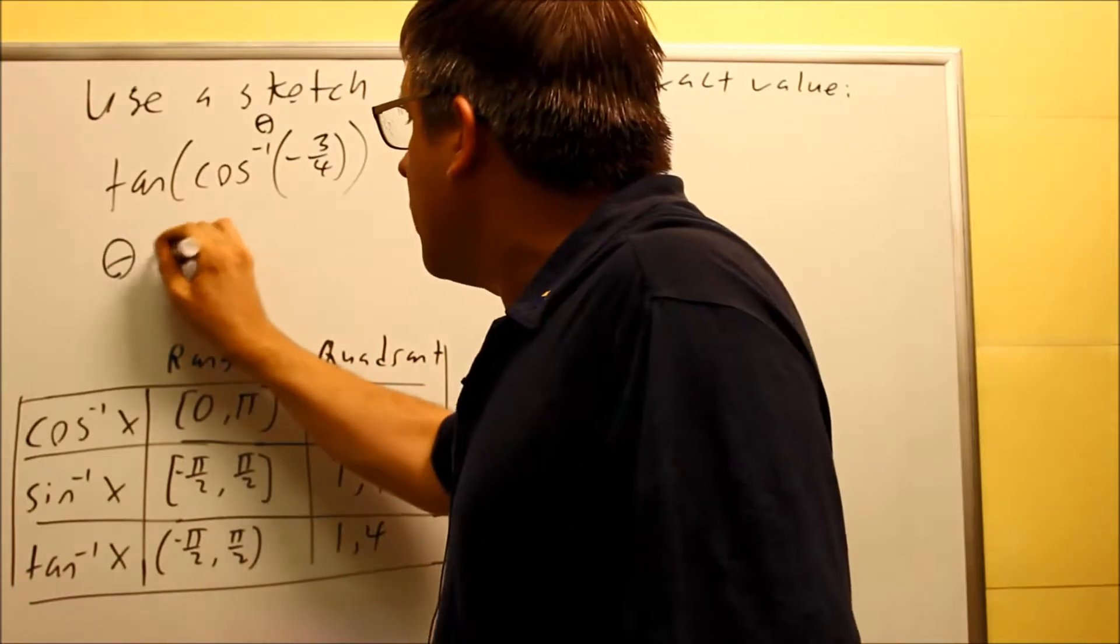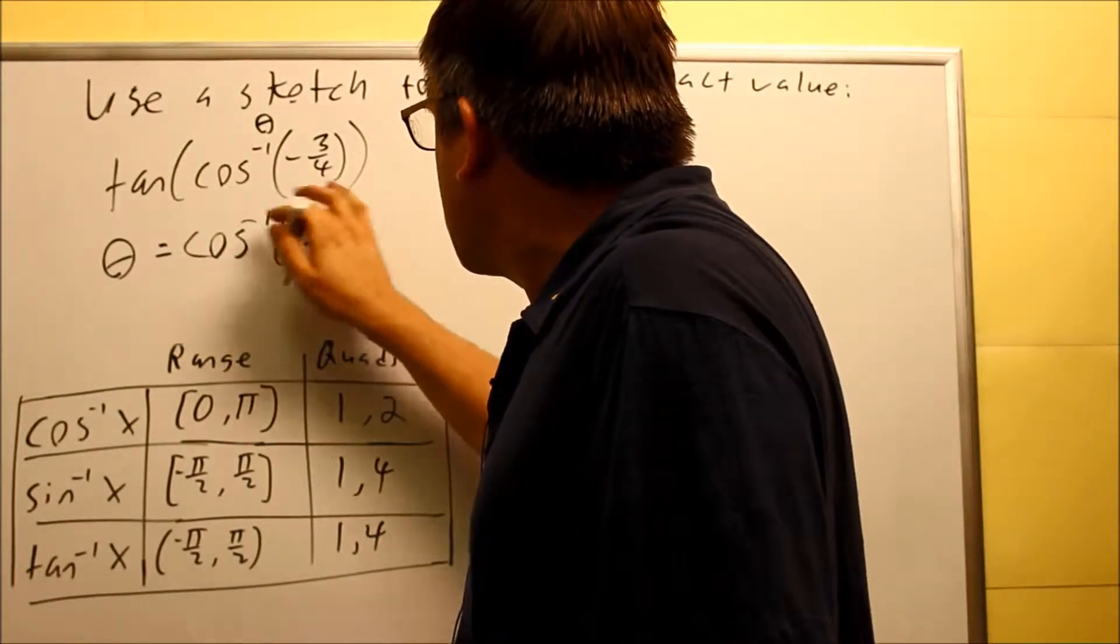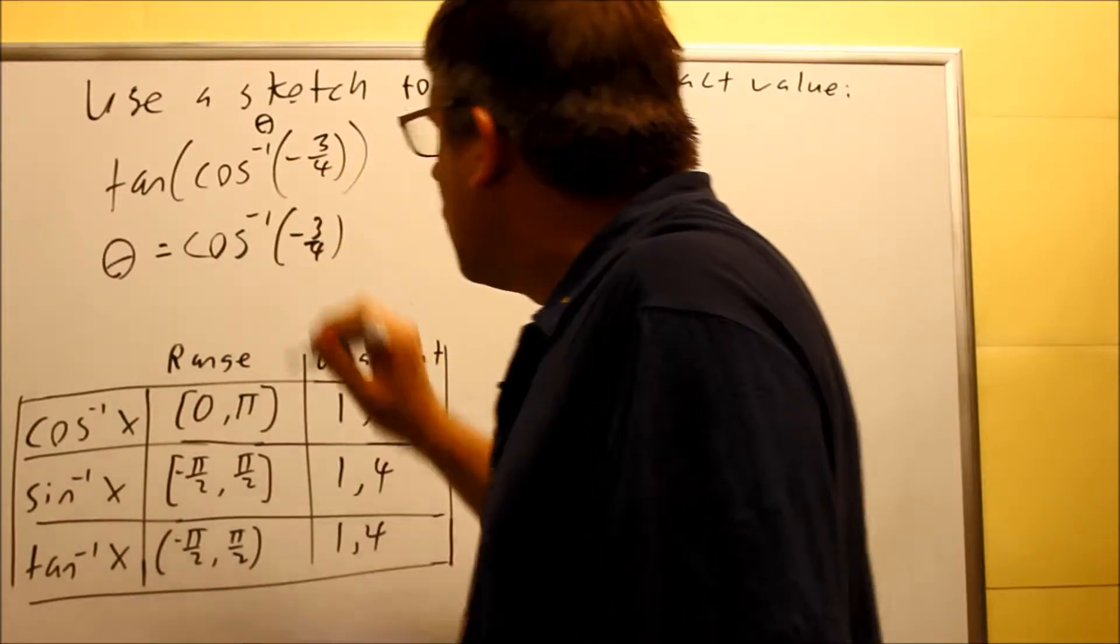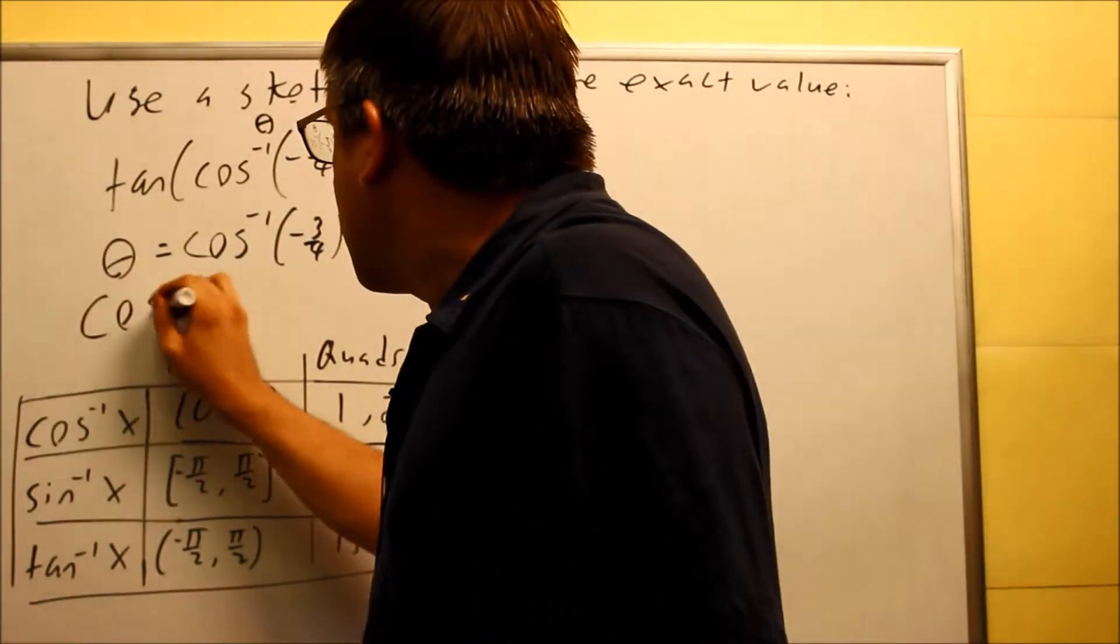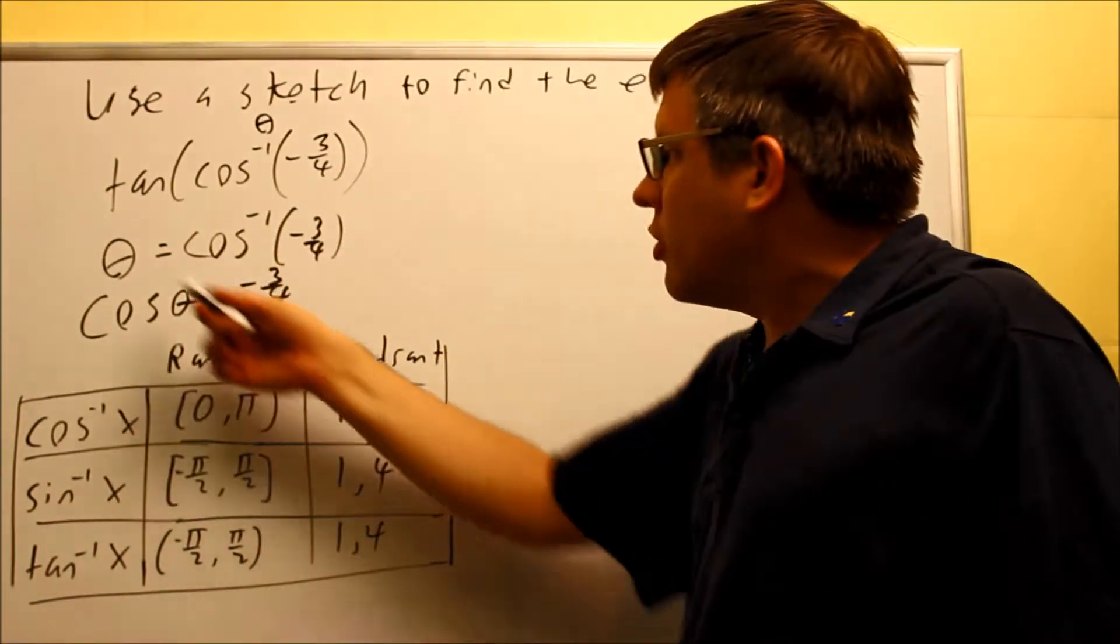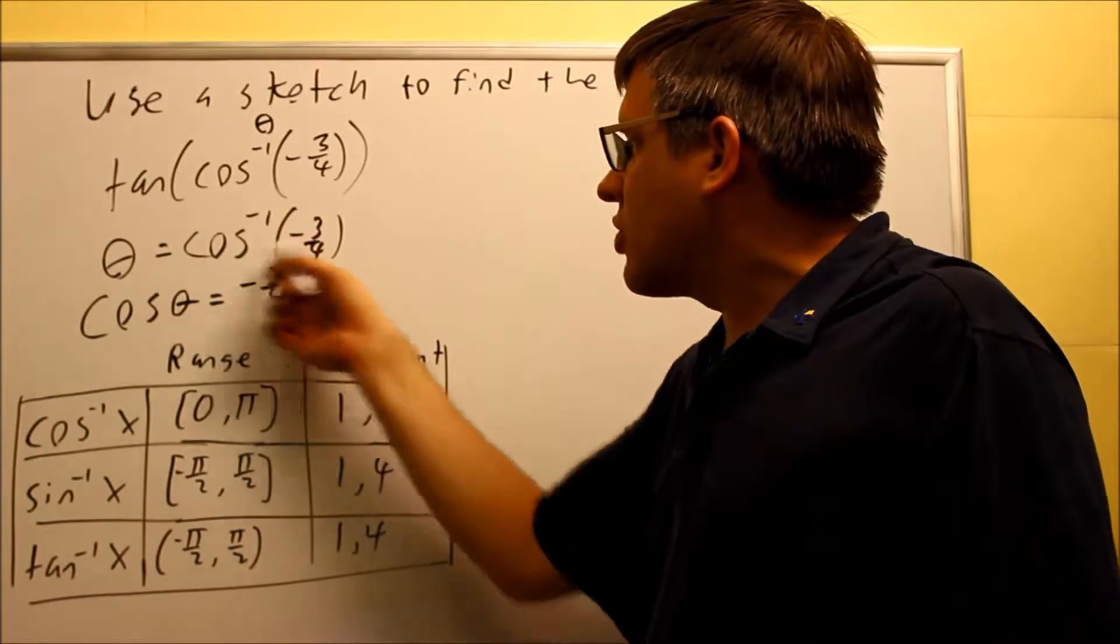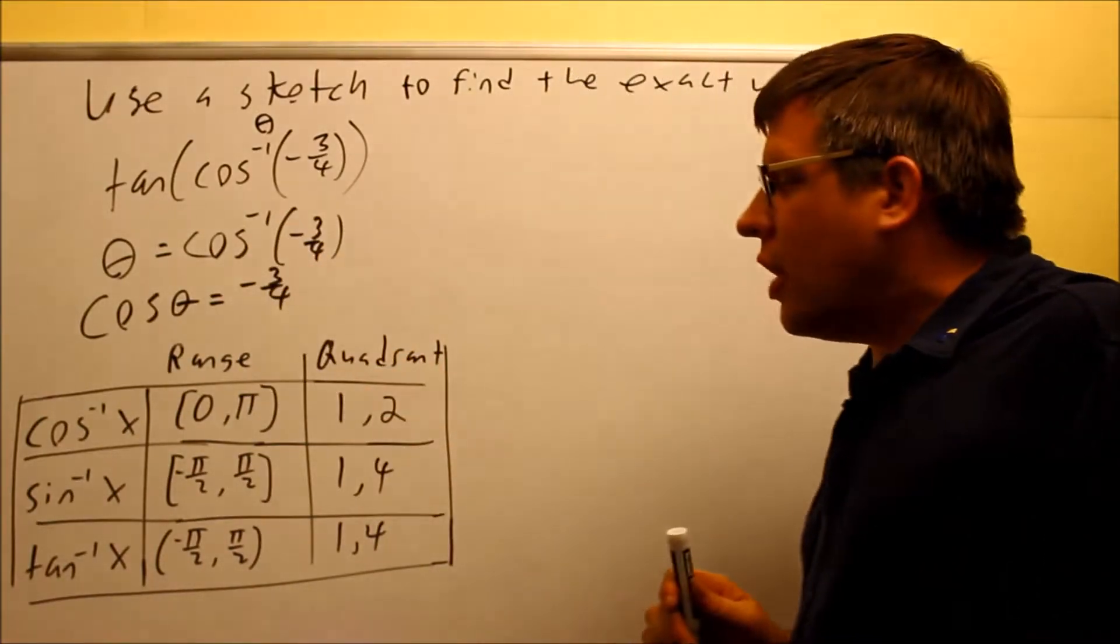Theta is on the inside. Theta would equal your inverse cosine of negative three fourths. And then what we need to do is apply cosine to both sides. And we get cosine theta equals negative three fourths. So you're applying cosine on both sides. Cosine of inverse cosine cancels, and that's why we end up with just the number on the end there.